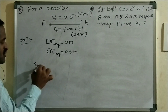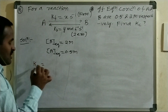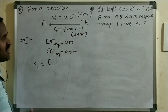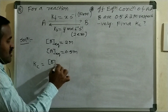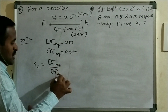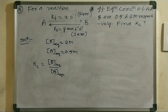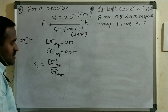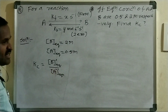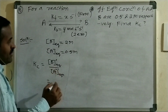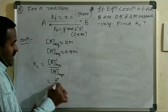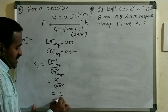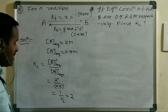K_eq = [B]_eq^0 / [A]_eq^1 = (2)^0 / (0.5)^1 = 1 / 0.5 = 2. So the equilibrium constant Kc = 2.